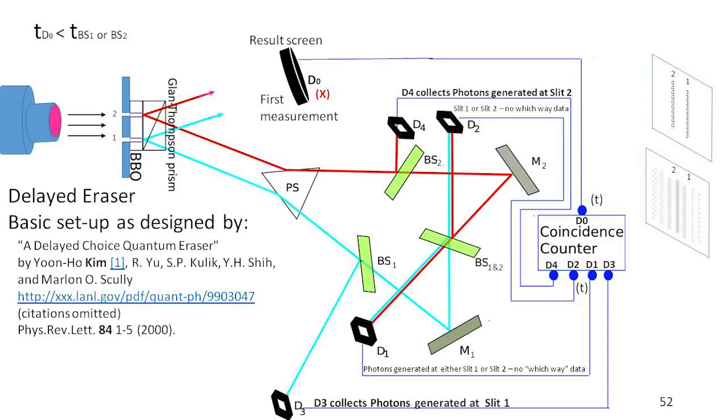That particle will hit D0 at that result screen long before it gets to BS2, BS1, these green parallelograms that you see. Those are silvered mirrors - well, take that back. Those are beam splitters. That's what the BS stands for. Beam splitter 1, beam splitter 2.